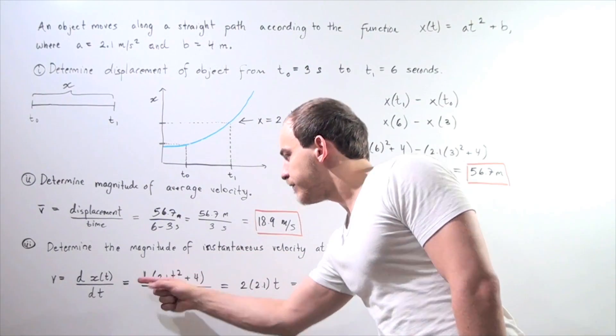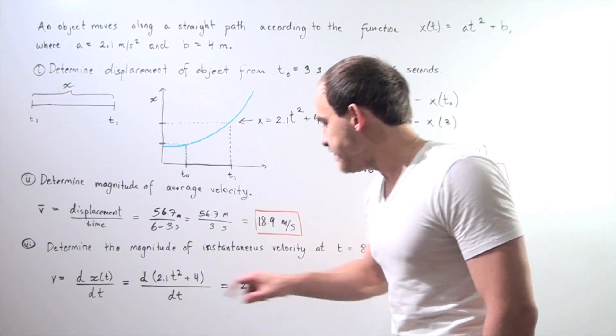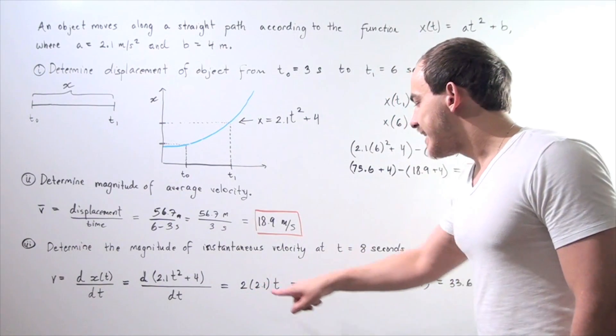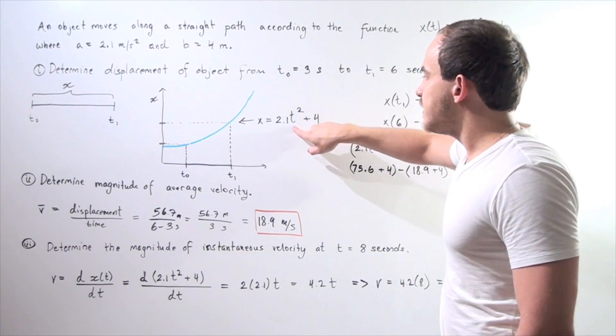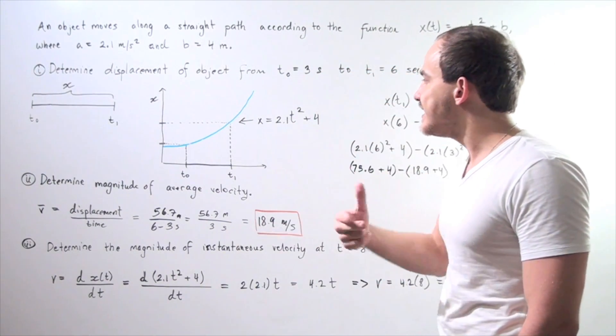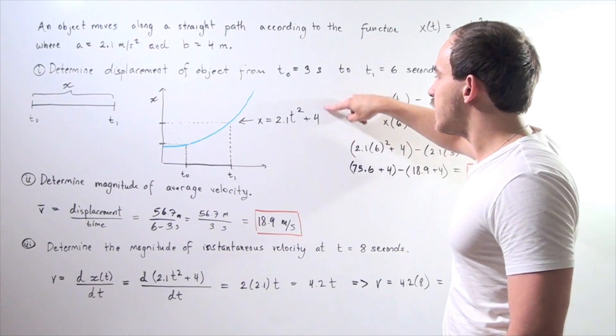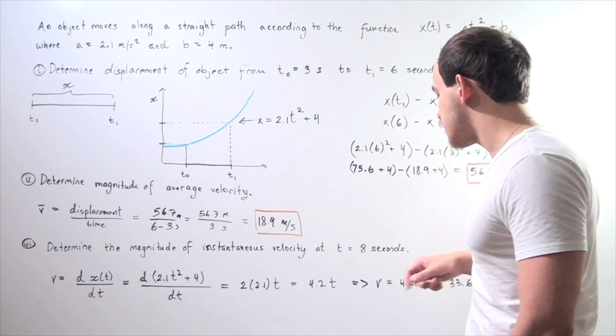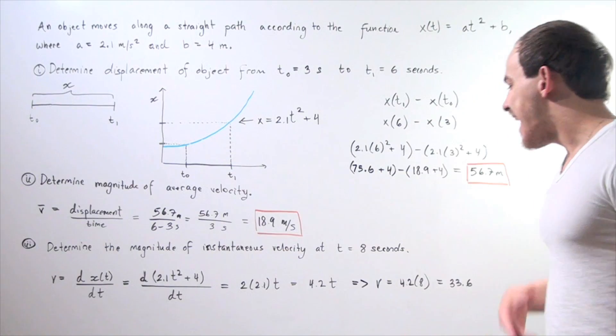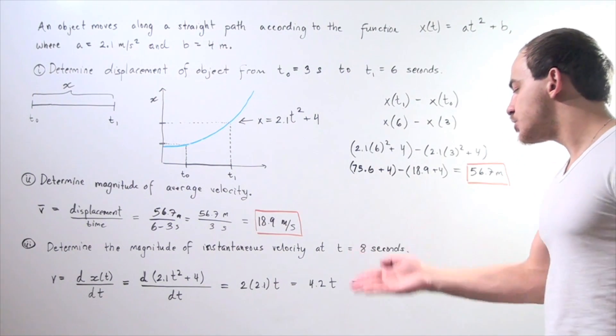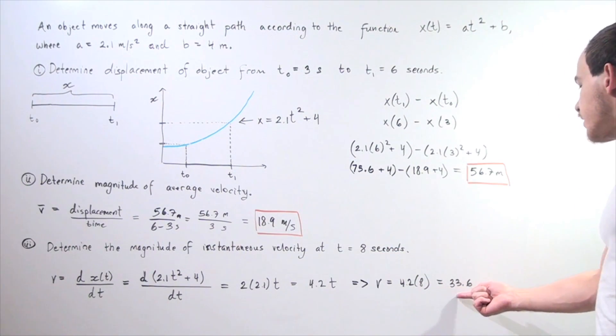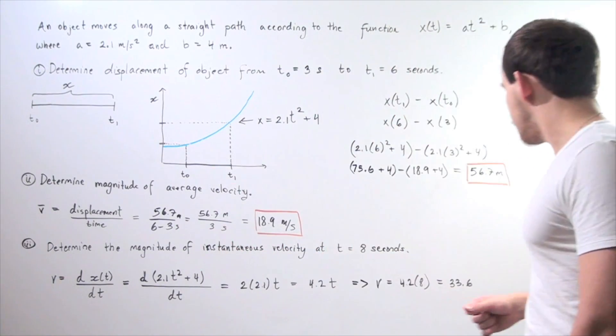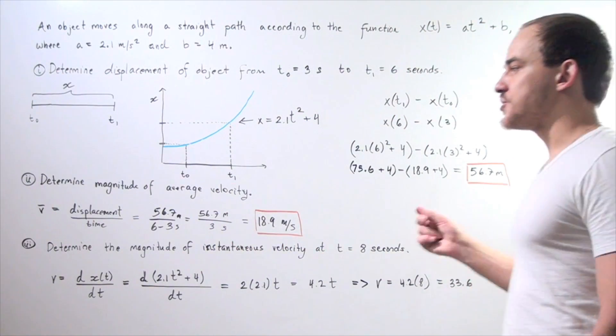We take our equation and find the derivative with respect to t. We get 2 times 2.1 times t. What happens is this t² becomes 2 times t times this value, and b becomes 0 because there is no t value there. So we get v(t) = 4.2t. Our velocity is 4.2 times our 8 second value, and we get 33.6 meters per second.